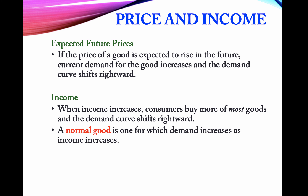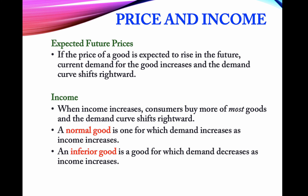When thinking about income, there are distinctions between types of goods. If demand increases with an increase in income, we call that a normal good. An inferior good is one where, as income increases, we buy less of it.